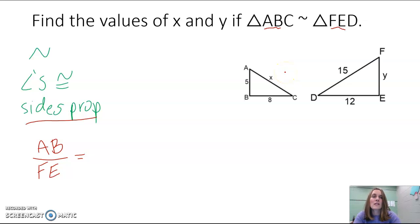That ratio should be proportional to like if I looked at BC over ED, our second and our third. And then the same goes with A and C and F and D. So AC over FD.